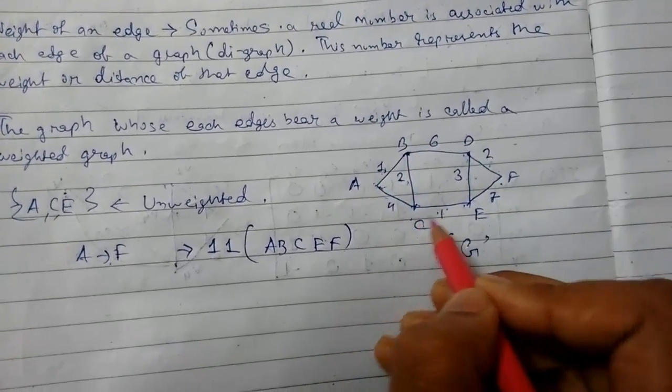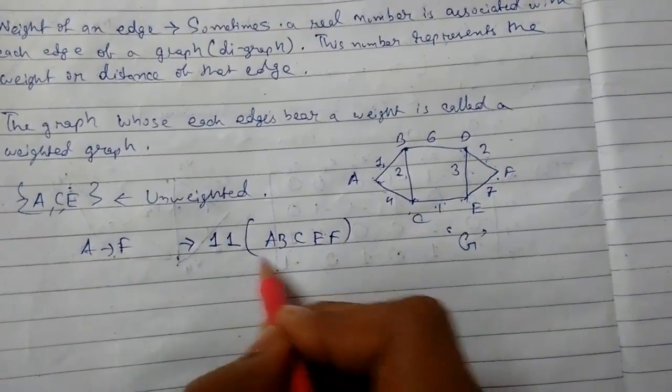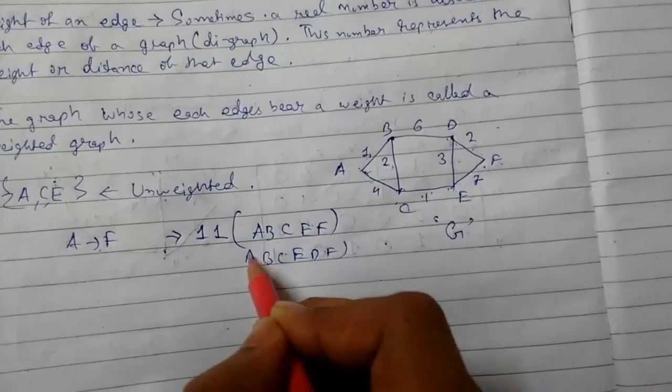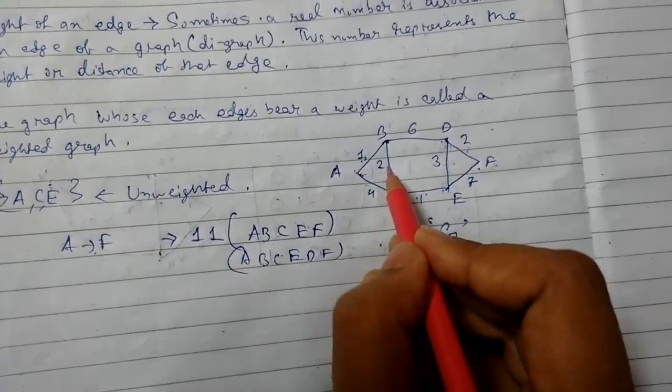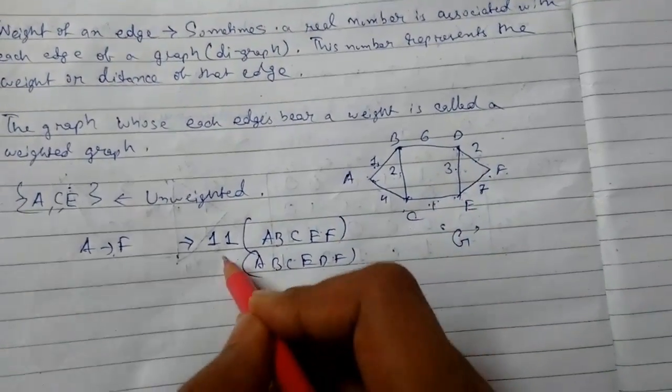Now we will see more alternatives. Suppose we go from A-B-C-E-D-F. What will be the sum? 1, 3, 4, 7, and 9. This is 9.